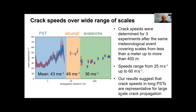Putting together our results, we performed three experiments after the same meteorological event, covering scales from less than a meter up to more than 400 meters. The speeds ranged from 25 meters per second up to 60 meters per second, and they did not show a clear scale dependency. Our results therefore suggest that crack speeds in propagation saw tests are representative for large-scale crack propagation as well.